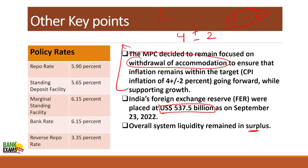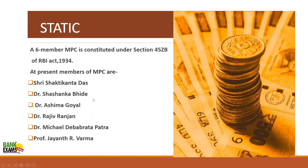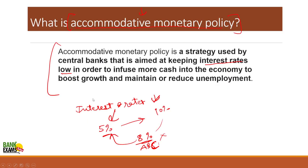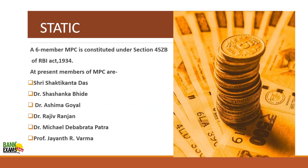Overall system liquidity remained in surplus. Key policy rates: the repo rate is now 5.9 percent, the Standing Deposit Facility (SDF) is 5.65 percent, the Marginal Standing Facility (MSF) is 6.15 percent, the bank rate is 6.15 percent, and the reverse repo rate is 3.35 percent.